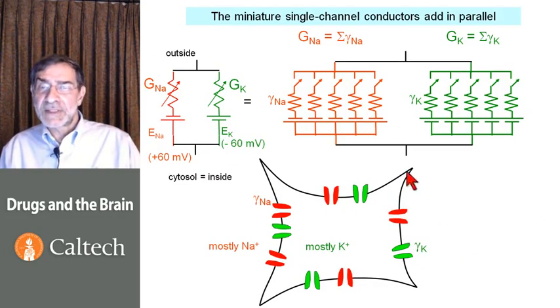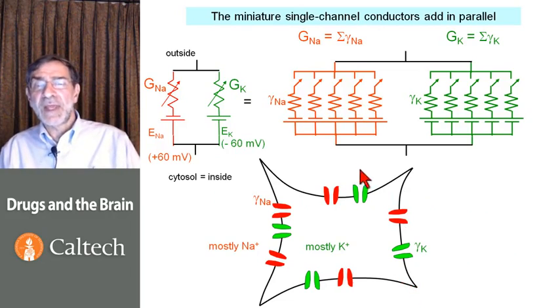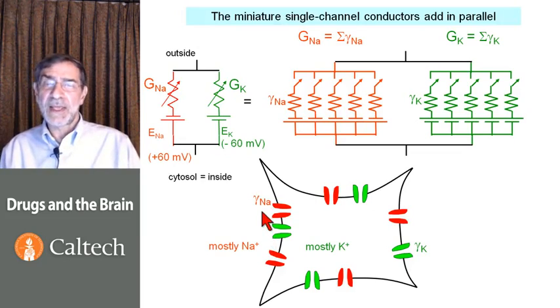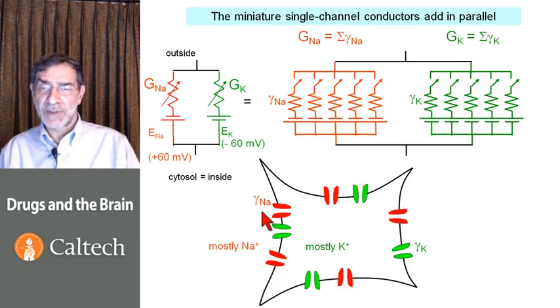This is a slightly more physical picture of a cell. We have the potassium channels in green, which are usually open, each of which has its little gamma. We have sodium channels that are sometimes open. They all have their little gammas as well. Here we make a key point.